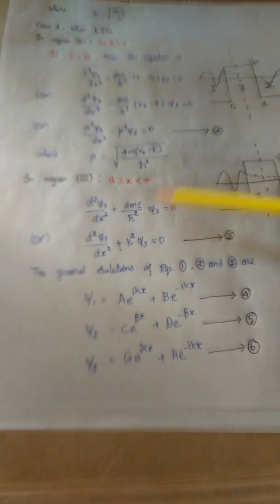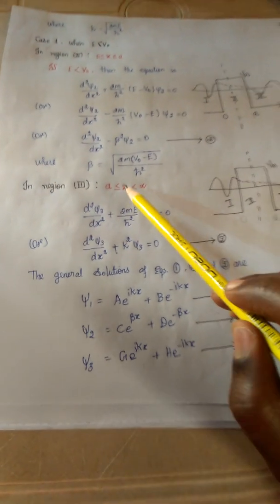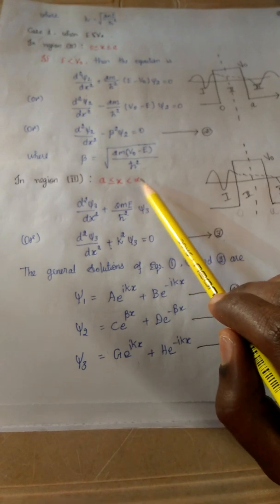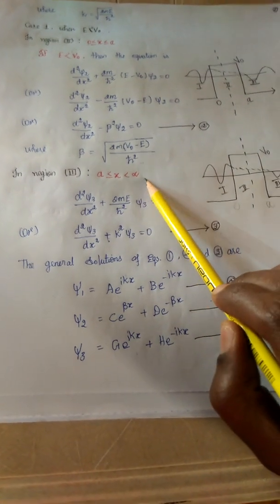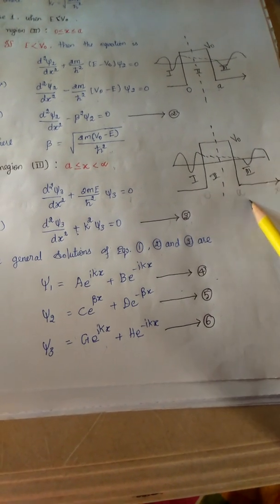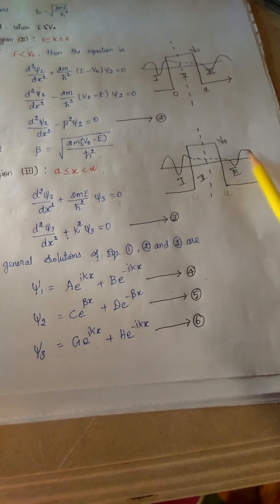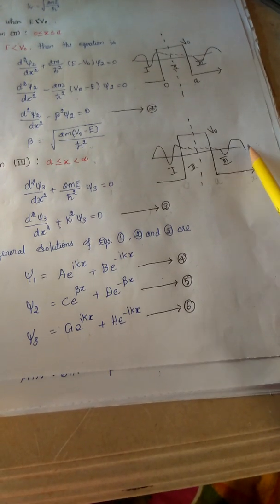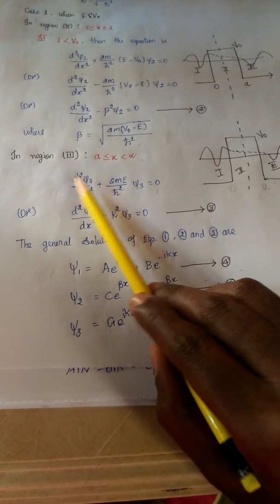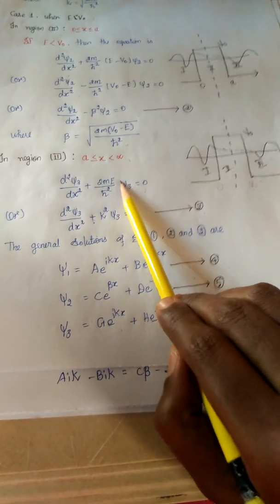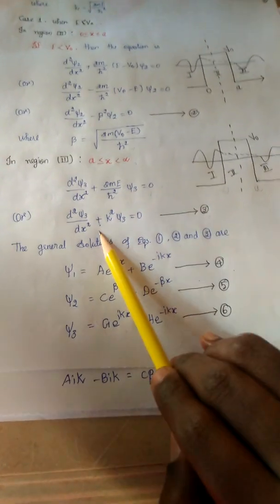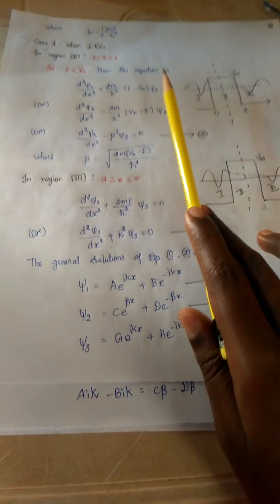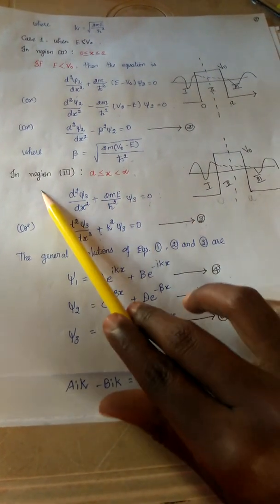For region 3, where A ≤ x < ∞, the equation is d²ψ₃/dx² + (2ME/ℏ²)ψ₃ = 0, which simplifies to d²ψ₃/dx² + k²ψ₃ = 0, and this is equation 3. So equations 1, 2, and 3 correspond to regions 1, 2, and 3 respectively.